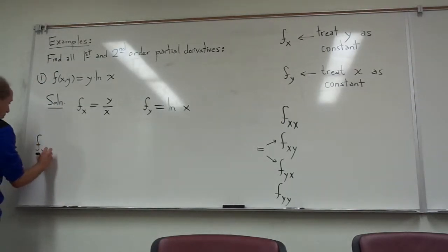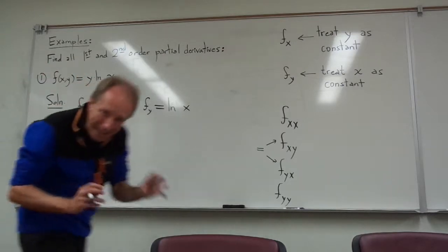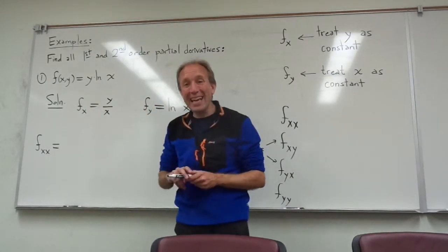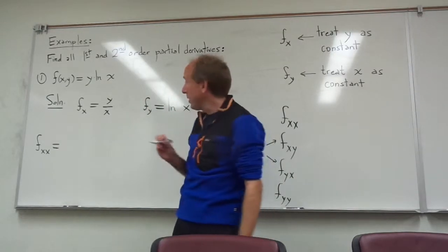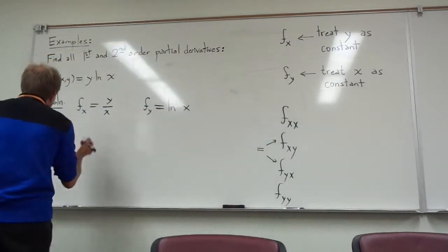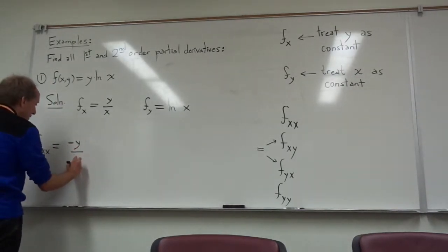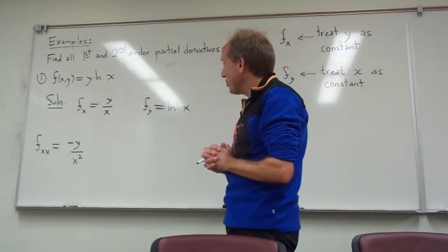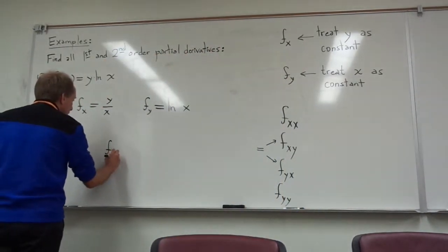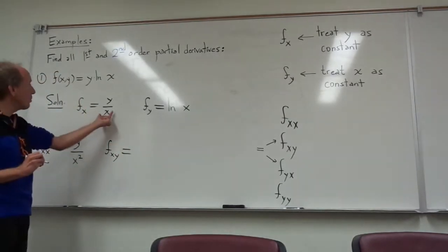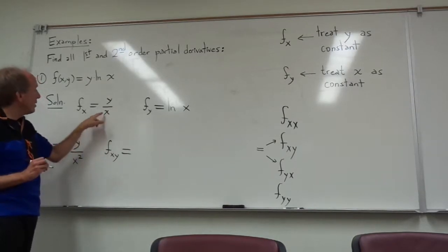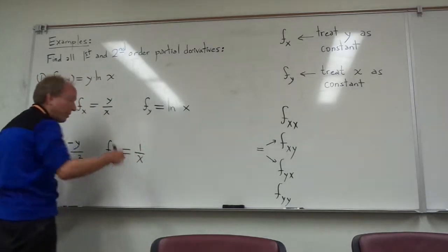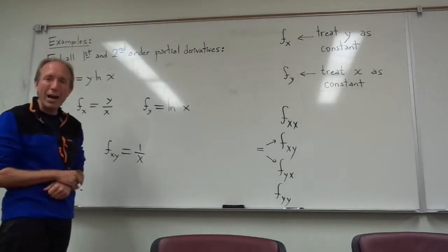Now let's do the second order partials. Let's calculate f sub x sub x — differentiate the first partial with respect to x again. I treat y as a constant; x is being raised to the negative 1 power, so the power rule gives me negative x to the negative 2, and the y is just a constant I bring along. For f sub xy, I take y over x and treat x as a constant. So 1 over x is just a constant multiplied by y, and the derivative with respect to y is just 1 over x.